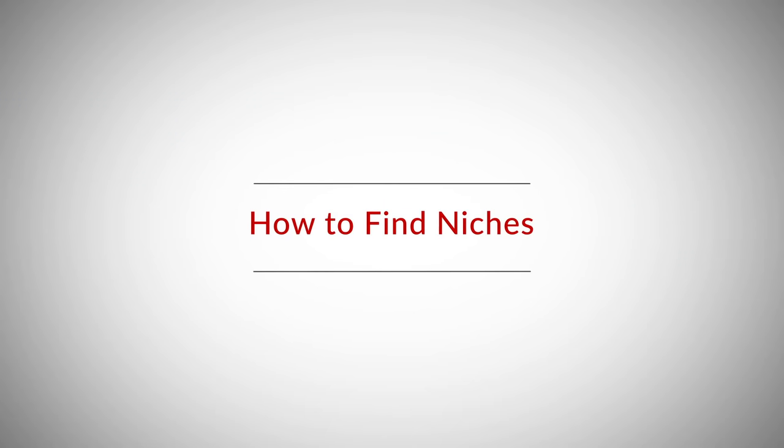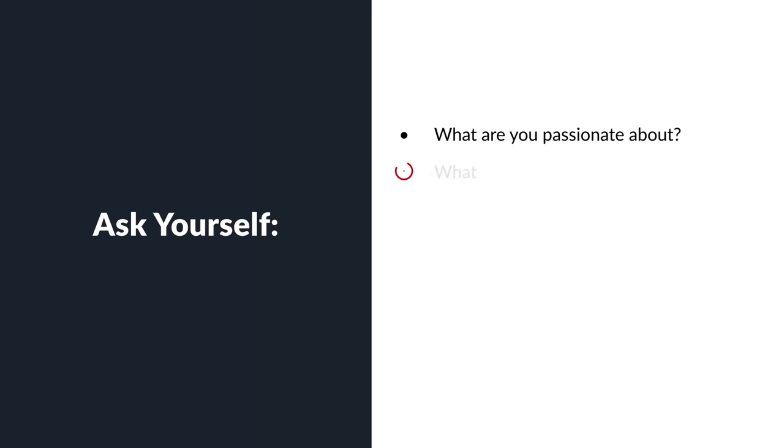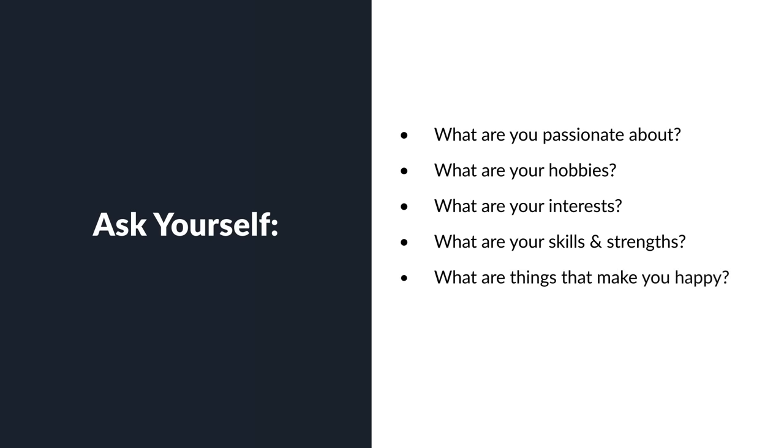The focus of this lesson is going to be on building a list of potential niches that you can enter. The following lesson will help you narrow down this list. For now, let's just focus on finding some possible niches. The first thing I like to do is think about my life in general — simply ask yourself: what are you passionate about? What are your hobbies, interests, skills, and strengths? What are things that make you happy or mad? I'm going to actually do this exercise with you.